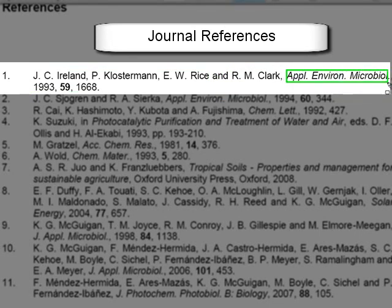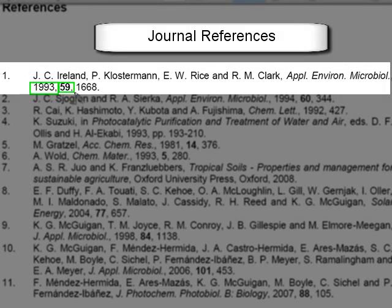Then we've got the journal name abbreviated appropriately, and those abbreviations are available on the Royal Society of Chemistry website. We've got the year, then a comma, then the volume in bold, a comma. You can put in the issue numbers there as well. And then we've got the first page number, and then there's a full stop.